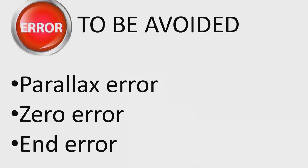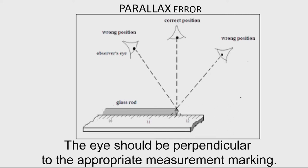Now, while using your measuring instrument, there are certain errors that are to be avoided. And there are three main errors that are to be avoided. They are the parallax error, the zero error, and the end error.